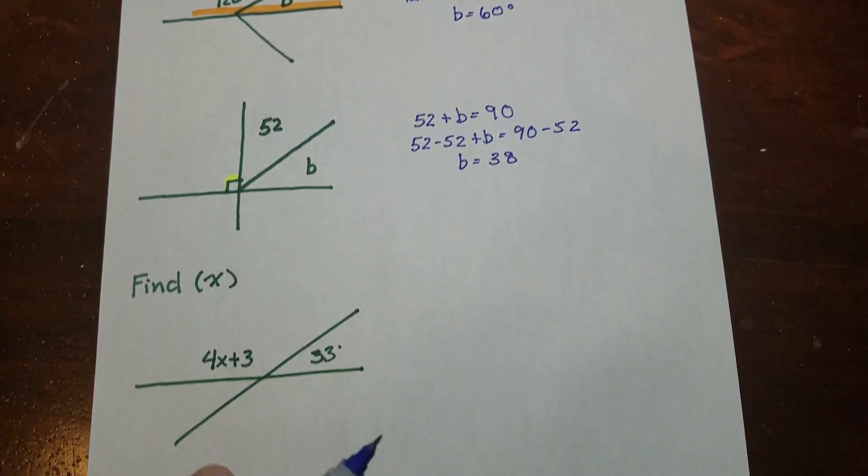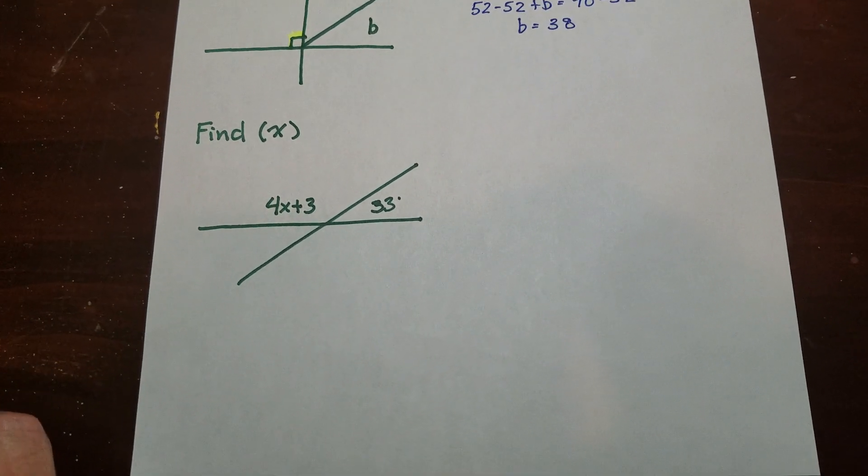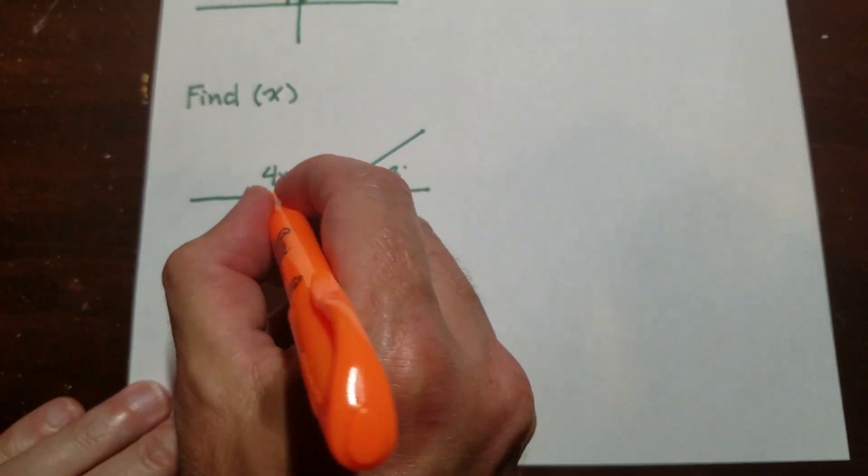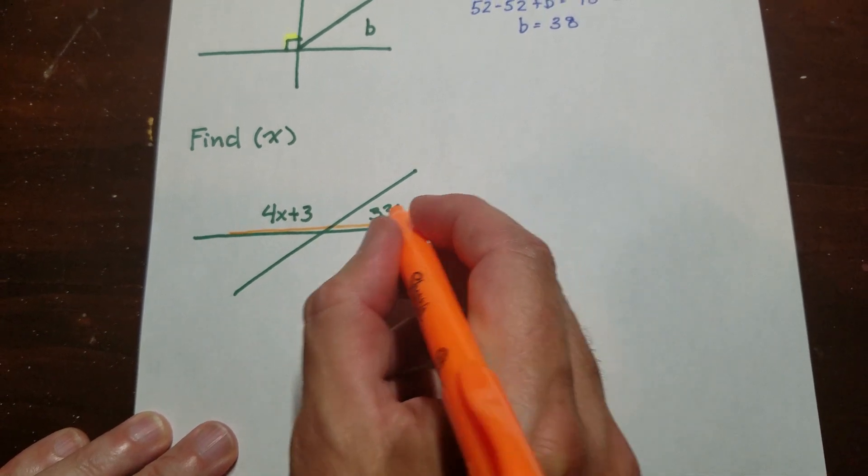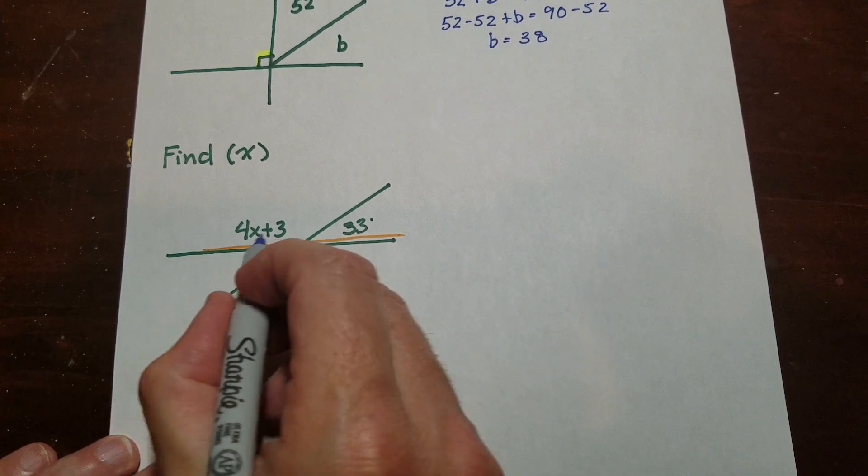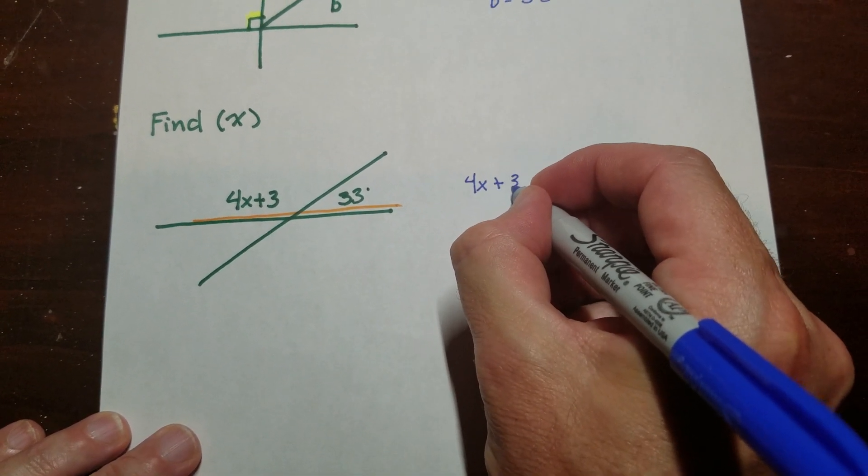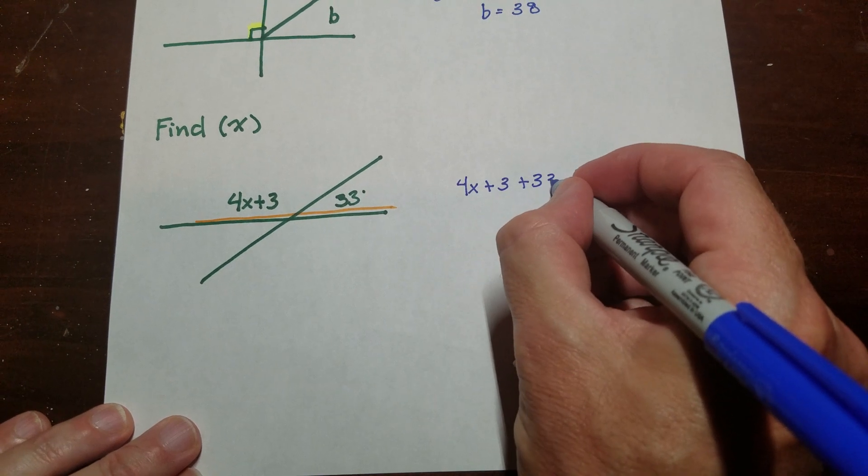And this one, find x. So we'll change this up just a little bit, but it's the same. These are, it looks like, they're on the same line here. So it means that this is a linear pair. So, that means that they add to 180. So I set up my equation like so.